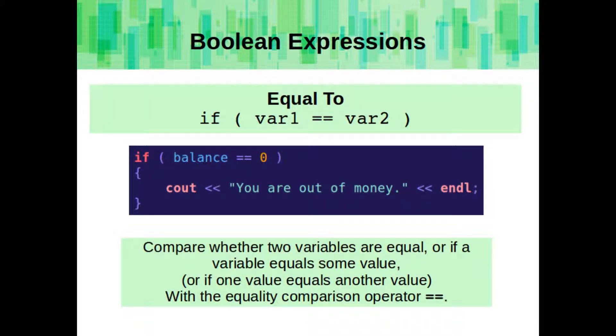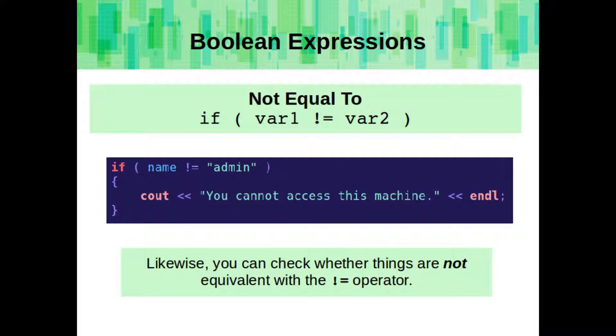We can compare whether two variables are equal, or if a variable equals some hard-coded value, or we can check one hard-coded value against another hard-coded value. We can use the equality operator here. Note that to compare equality, we use a double equal sign, whereas when we are assigning a value to a variable, we use a single equal sign. We can also check whether two things are not equal to each other using the not operator. This is an exclamation point followed by the equal sign.